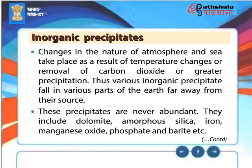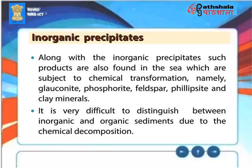Changes in the nature of the atmosphere and sea take place as a result of temperature changes, removal of carbon dioxide, or greater precipitation. Thus, various inorganic precipitates fall in various parts of the earth far away from their source. These precipitates are never abundant and include dolomite, amorphous silica, iron, manganese oxide, phosphate, and barite. Along with the inorganic precipitates, such products are also found in the sea which are subject to chemical transformation, namely glauconite, phosphorite, feldspar, phillipsite, and clay minerals. It is very difficult to distinguish between inorganic and organic sediments due to chemical decomposition.